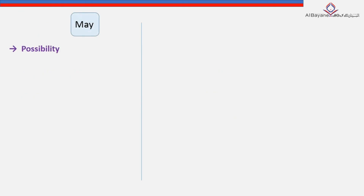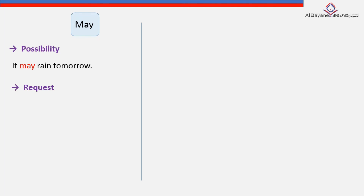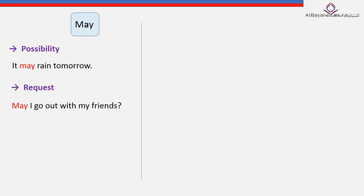'May' is used to express possibility or request. For instance: 'It may rain tomorrow.' For request, it works like 'can' — they are similar in this case. So we say: 'May I go out with my friends?' — 'Yes, you may' for a positive answer, or 'No, you may not' for a negative answer.